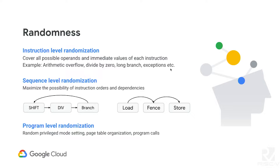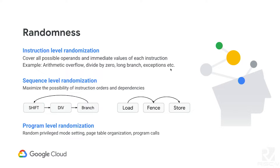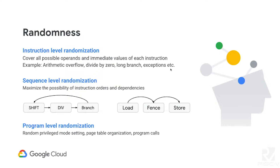When we talk about randomness, it's actually multi-level randomization. At the bottom level is instruction-level randomization — you randomize each instruction to hit all corner cases and exceptions. One level above is sequence-level randomization, which maximizes the combination and ordering of instructions. Some are straightforward, but others need to be designed for — like branching to different types of instructions, or inserting a fence in the middle of memory operations. At the top level is program-level randomization, which involves privilege-mode setup, privilege-mode CSRs, page tables, and jumping between a large number of randomized sub-programs.